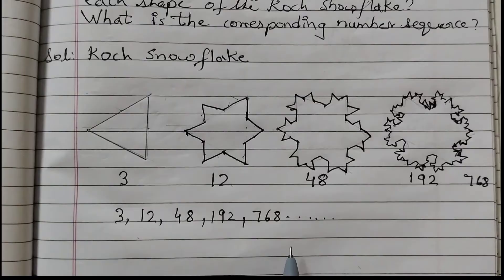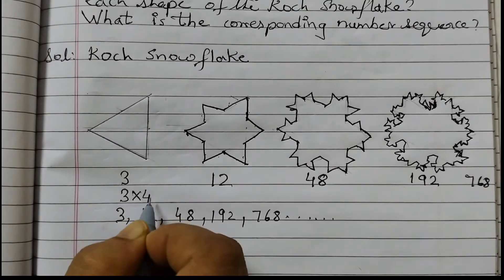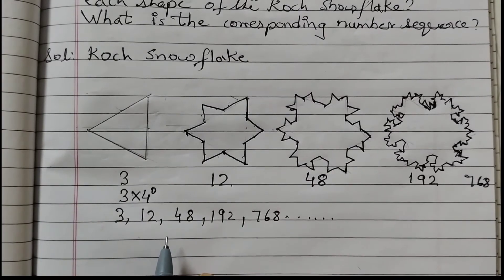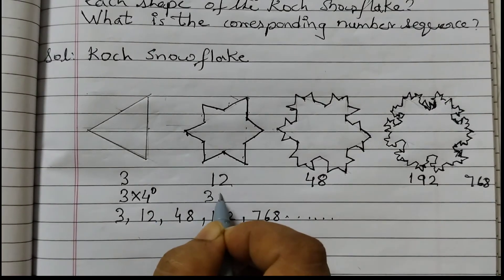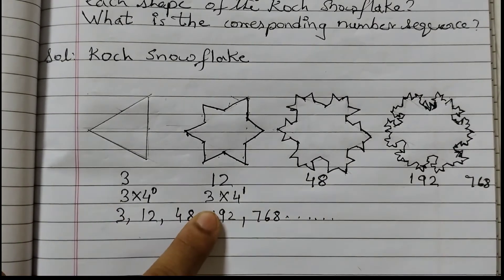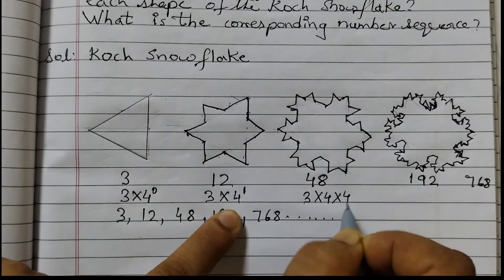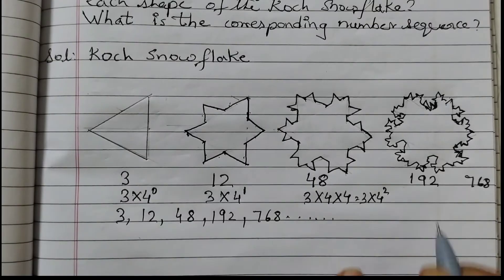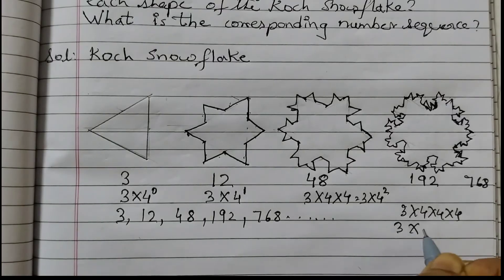How do we get this pattern? The first one is 3 into 4 to the power of zero — 4 to the power of zero is 1, so 3 into 1 is 3. The rule here is: 3 times powers of 4. The second is 3 into 4 to the power of 1, which equals 12. The third is 3 into 4 into 4, or 3 into 4 to the power of 2, which equals 48. The next one is 3 into 4 into 4 into 4, which is 3 into 4 to the power of 3.